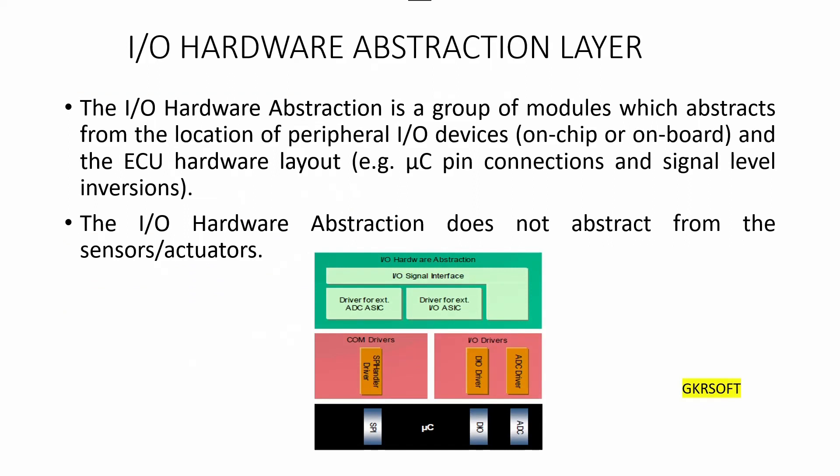Here we can discuss more deeply about each abstraction layer. First, we start with IO hardware abstraction layer. The IO hardware abstraction is a group of modules which abstracts from the location of peripheral IO devices and the ECU hardware layout — meaning microcontroller pin connection and signal level inversions. The IO hardware abstraction does not abstract from the sensors or actuators, and all these interfaces don't change the data. The different IO devices might be accessed via an IO signal interface. The task of IO hardware abstraction layer is to represent IO signals as they are connected to the ECU hardware — for example, current, voltage, frequency — and to hide the ECU hardware and layout properties from the higher software layers.